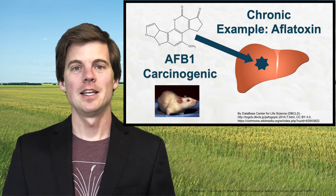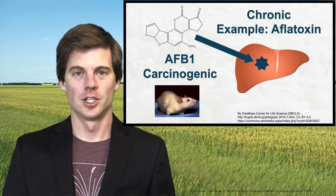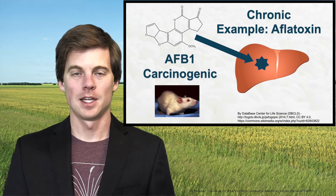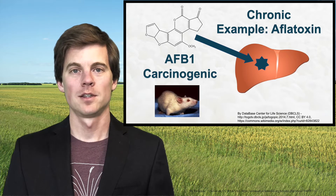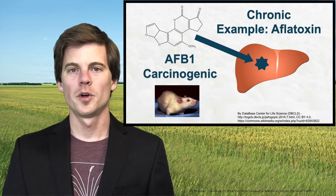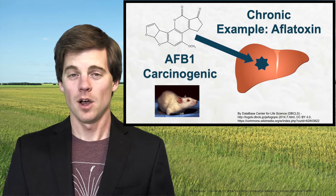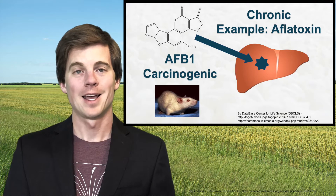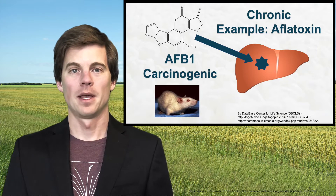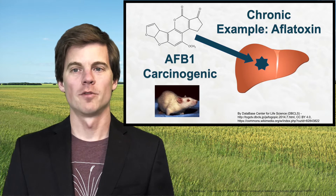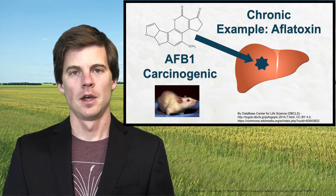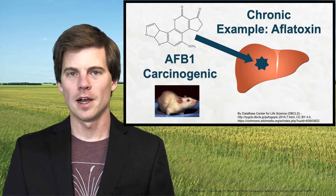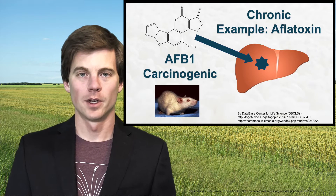Aflatoxin B1 is chronically carcinogenic, especially in rats. When researchers fed rats either contaminated feed or straight aflatoxin, 50 to 100 percent of them — at some doses, 100 percent of the rats — would develop hepatocellular carcinoma, also known as liver cancer. It was a very potent effect. But in toxicology research, you can't put all your eggs in one basket by looking at just one animal.